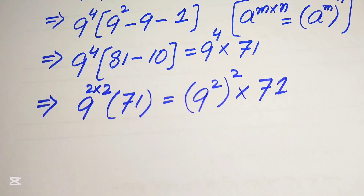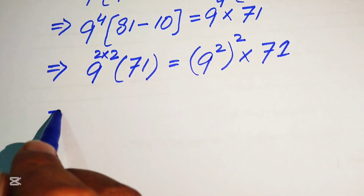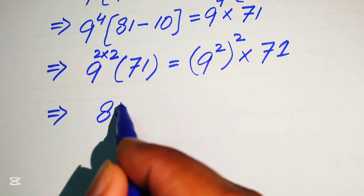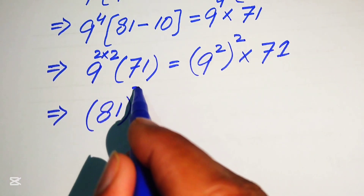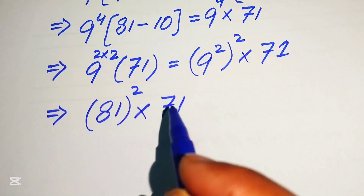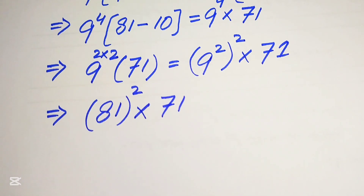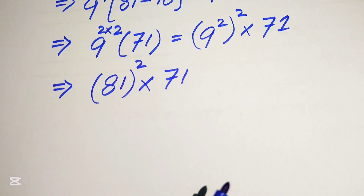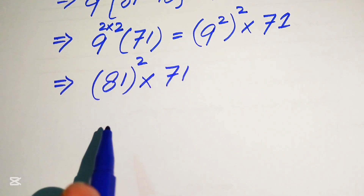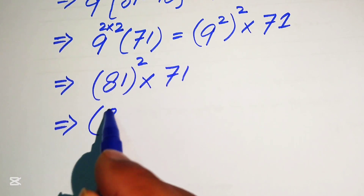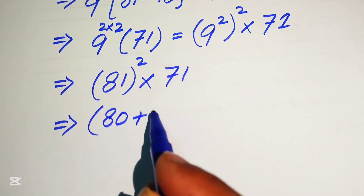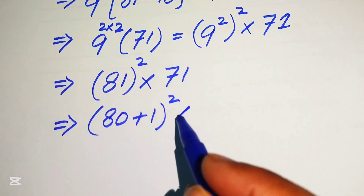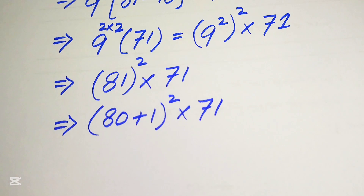In the next step, we substitute 9 squared equals 81, giving us 81 squared multiplied by 71. We then write 81 as 80 plus 1, so this becomes 80 plus 1, whole squared, multiplied by 71.